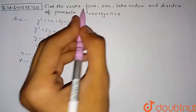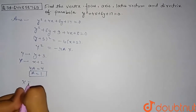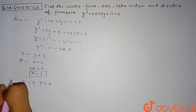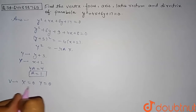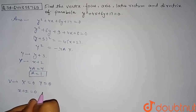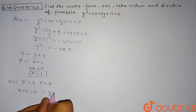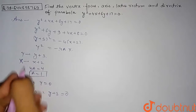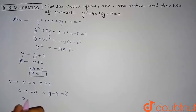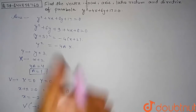Now we find the vertex. For the standard parabola, the vertex is at x = 0 and y = 0. For our parabola, setting x + 2 = 0 gives x = −2, and setting y + 3 = 0 gives y = −3. So the vertex V is (−2, −3).